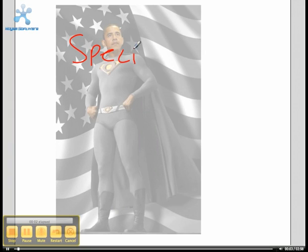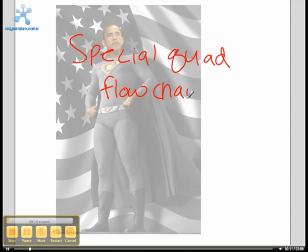We are doing a special quadrilaterals flowchart. My name is Jake. I'm Dustin. I'm Callie. And the magic marker is Abby.